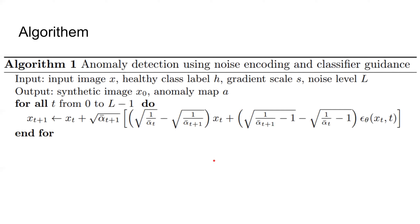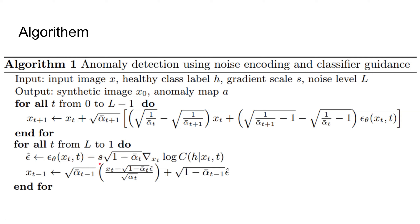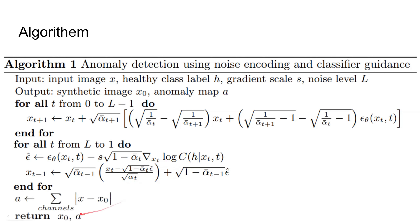Now the inference algorithm — we train the diffusion model and the classifier separately, so this is just the inference procedure. As mentioned before, we have the forward procedure: we gradually add noise to get X_T, and then we gradually remove the noises. We have S here controlling the conditional generation, and then we compute the new epsilon hat and substitute it into the backward procedure that removes the noise.